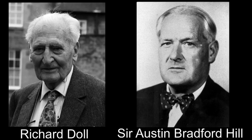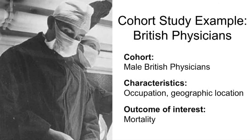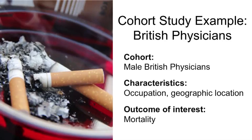A famous example of a cohort study was initiated in the early 1950s by Richard Doll and Sir Austin Bradford Hill. They began a 20-year study following a cohort of British physicians. The common characteristic defining this cohort was that they were male doctors whose names were in the 1951 British Medical Register. The characteristics used to assemble this cohort were occupation — physicians — and geographic location — Britain.